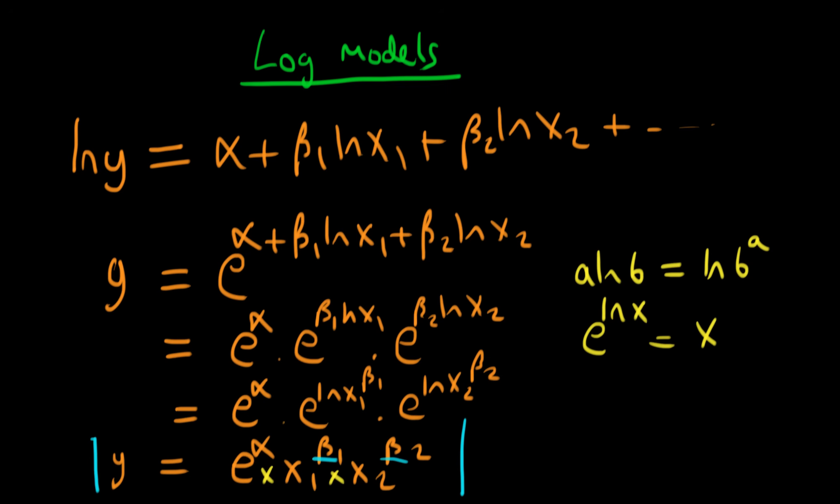So the effect of variable x1 on y depends on the value of x2 at that particular time. In this context it's not linear in the sense that x1 has some constant effect on y. Its effect on y depends on the value of x2 because we're multiplying them together.